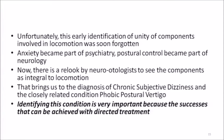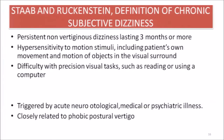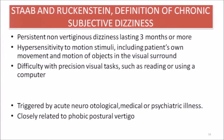Identifying chronic subjective dizziness is very important because of the success that can be achieved with direct treatment. Staab and Ruckenstein defined chronic subjective dizziness with three main parts: persistent non-vertiginous dizziness lasting three months or more; hypersensitivity to motion stimuli including patients' own movement and motion of objects in the visual surroundings; and difficulty with precision visual tasks such as reading printed paper or using a computer.